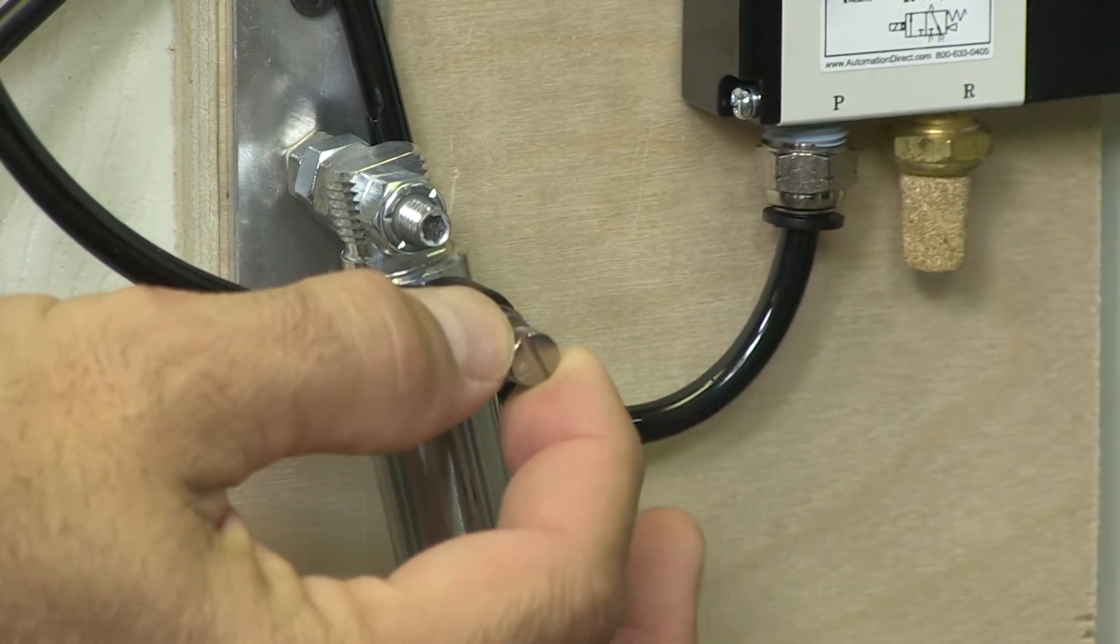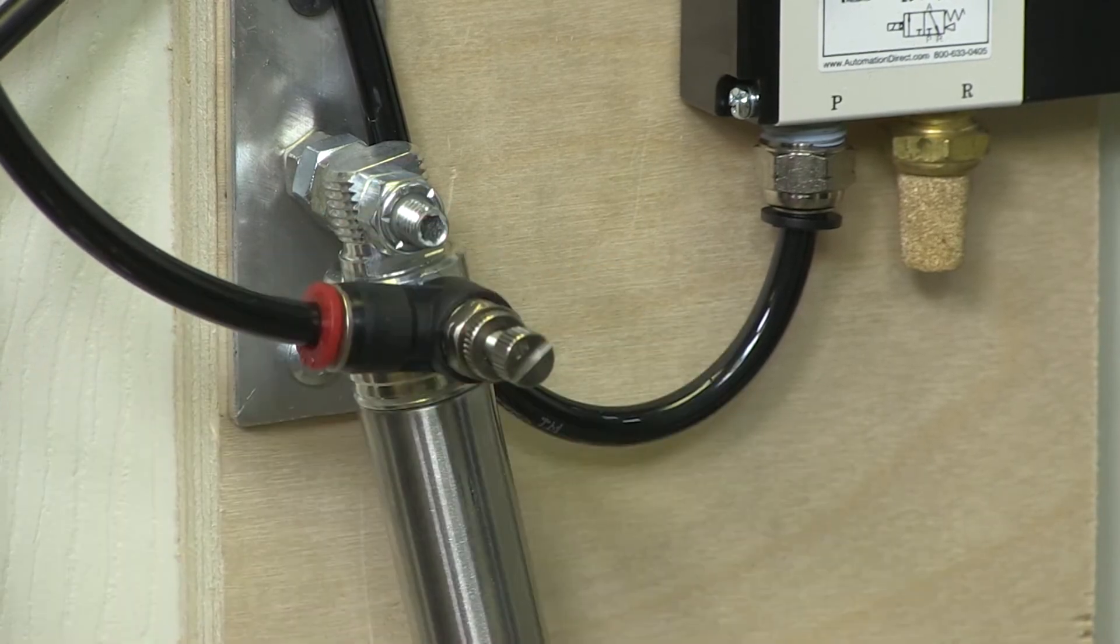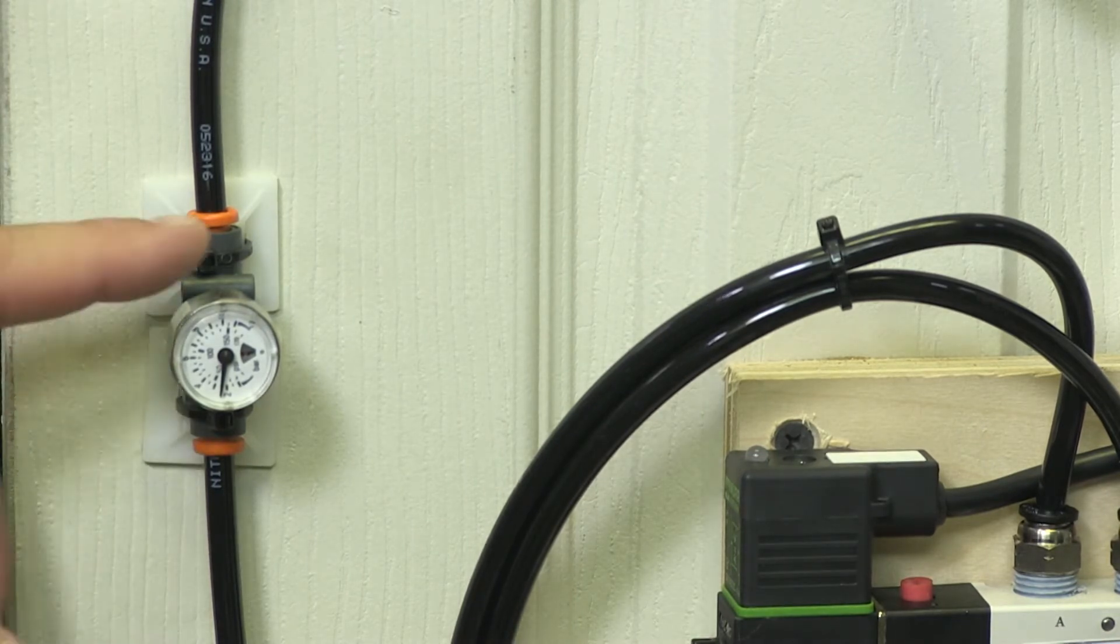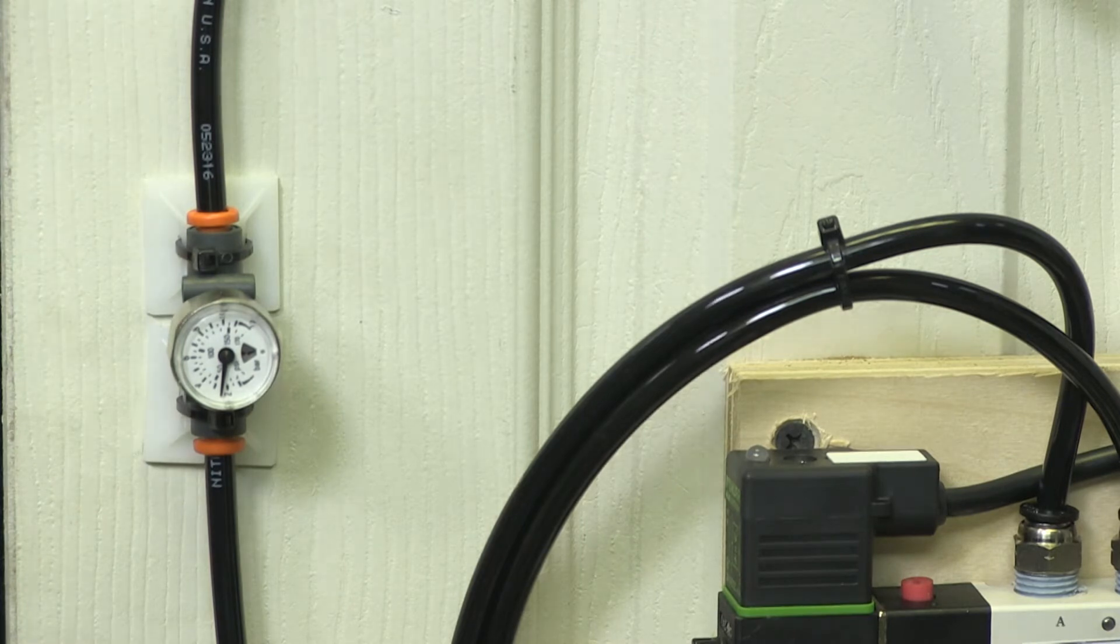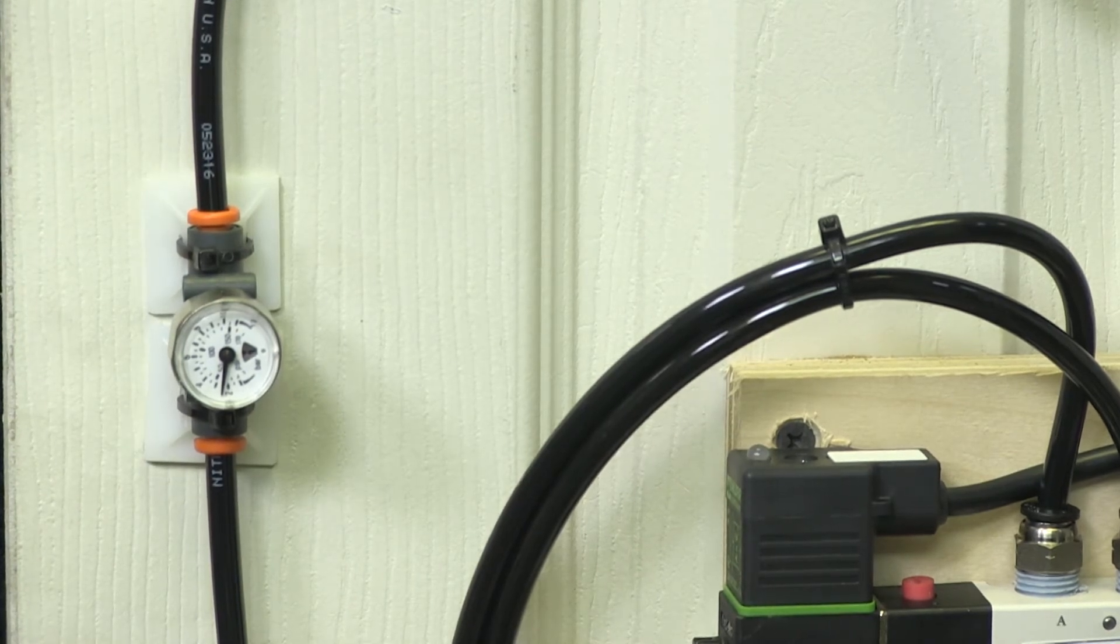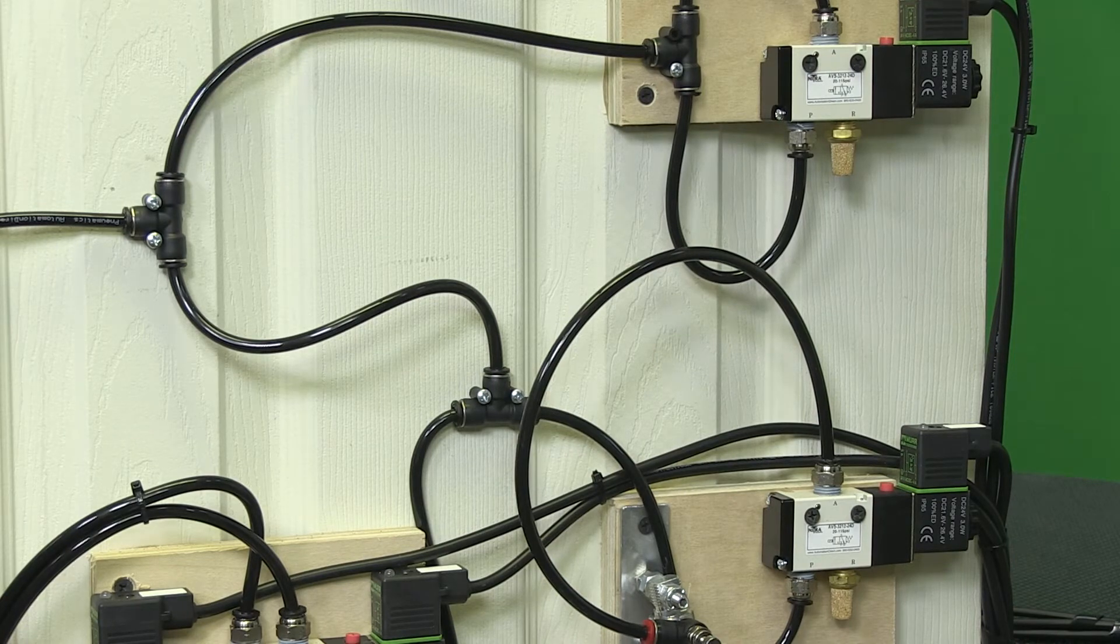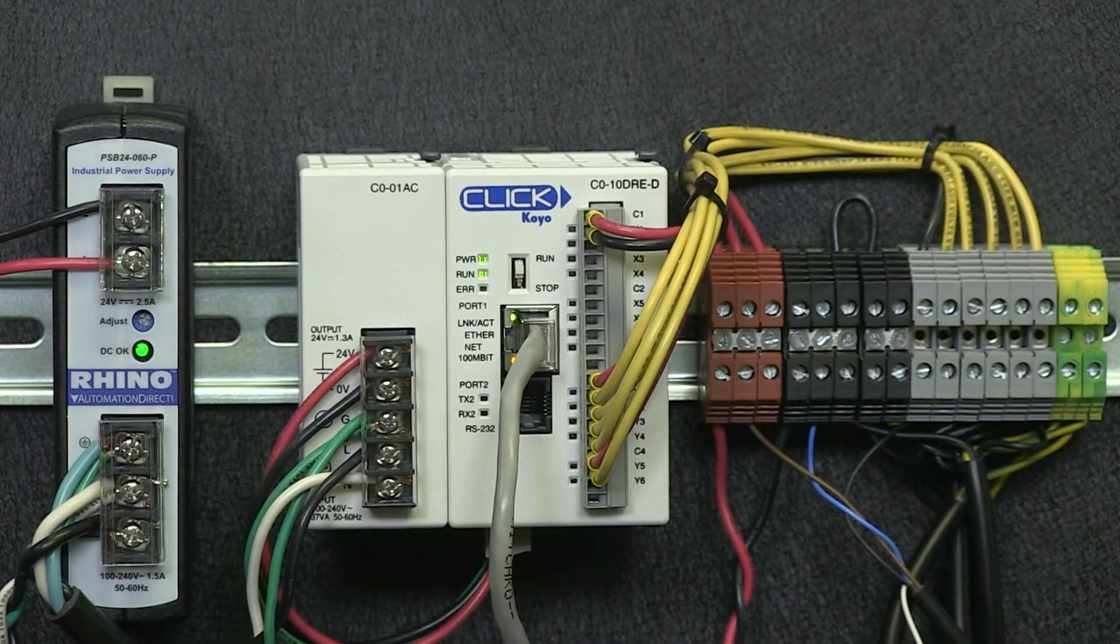I use flow control valves to adjust the flow so the cylinders move smoothly without slamming. This year I added one of these cool little guys, a push-to-connect inline pressure gauge. These gauges are very inexpensive and can be used anywhere on the system to check system pressure. The valves are all plumbed with flexible quarter-inch tubing and push-to-connect Nitro fittings.